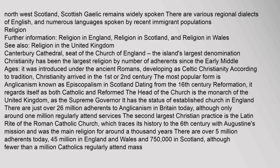Religion: Christianity has been the largest religion by number of adherents since the early Middle Ages; it was introduced under the ancient Romans, developing as Celtic Christianity. According to tradition, Christianity arrived in the first or second century. The most popular form is Anglicanism, known as Episcopalism in Scotland, dating from the 16th-century Reformation. It regards itself as both Catholic and reformed; the head of the church is the monarch of the United Kingdom as the supreme governor. It has the status of established church in England. There are just over 26 million adherents to Anglicanism in Britain today, although only around 1 million regularly attend services. The second largest Christian practice is the Latin Rite of the Roman Catholic Church, which traces its history to the 6th century with Augustine's mission. There are over 5 million adherents today — 4.5 million in England and Wales and 750,000 in Scotland.